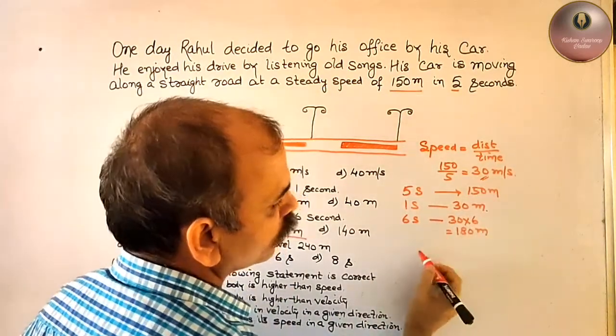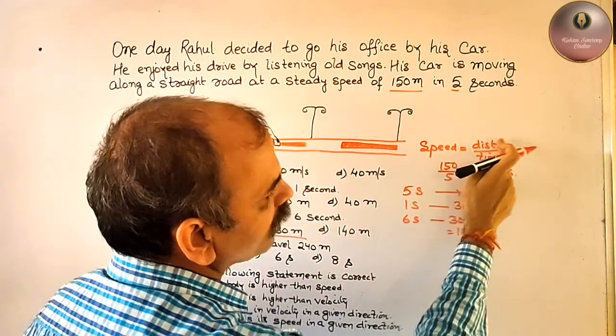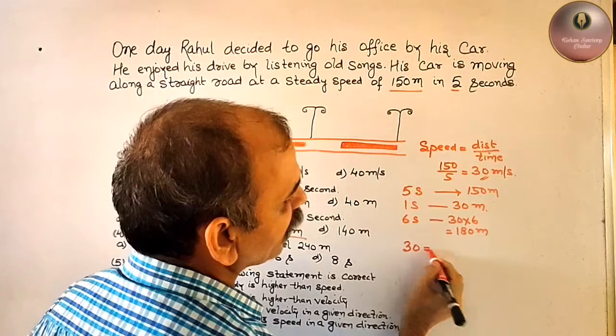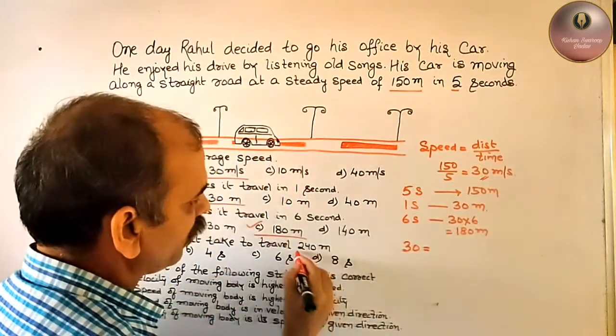We know that the speed is here. Speed is equal to distance by time. Speed they have given 30 that is equal to distance they have given 240.